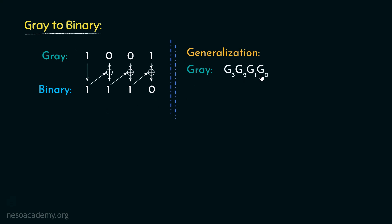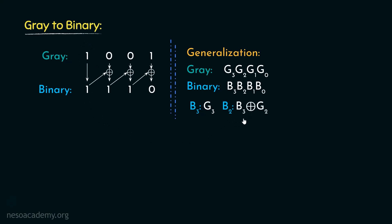From this we can state a generalization. Say we have a gray number G3, G2, G1, G0 and a binary number B3, B2, B1, B0. B3 is obtained directly from G3. B2 is obtained by XOR of B3 and G2. B1 is obtained by XOR of B2 and G1. B0 is obtained by XOR of B1 and G0.